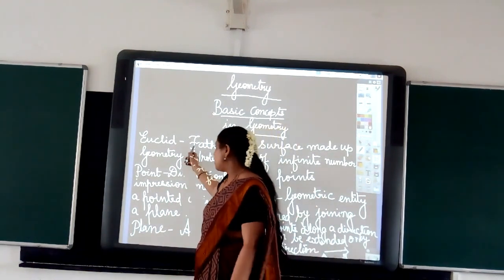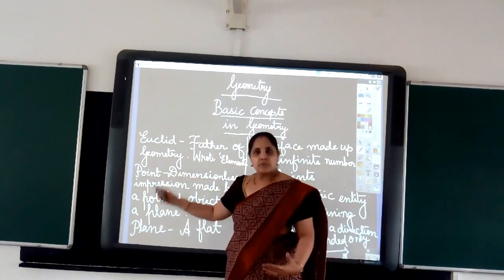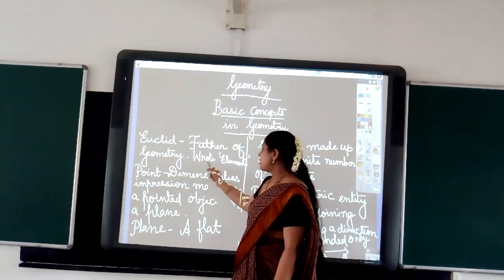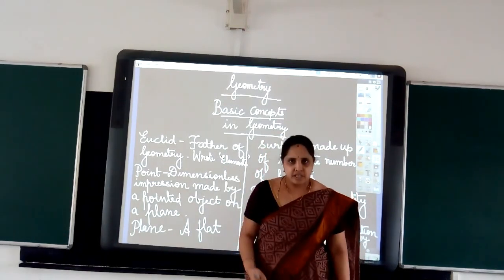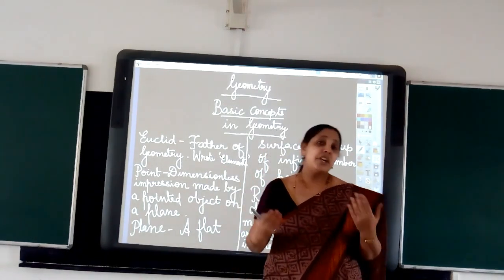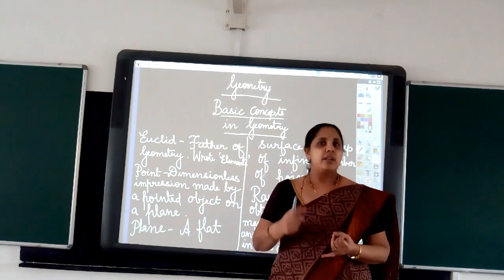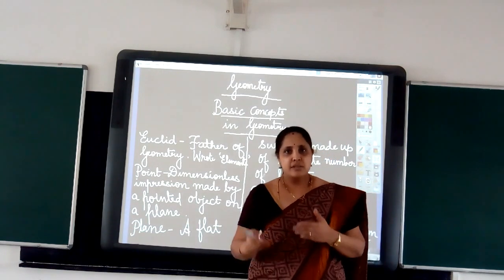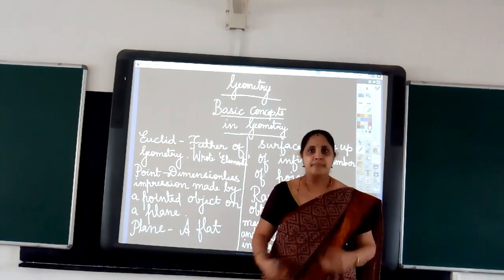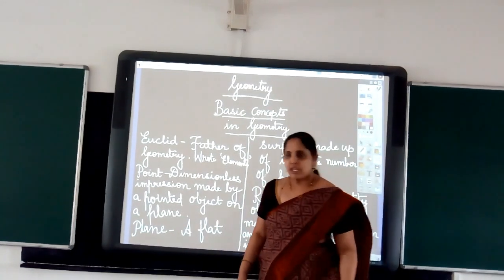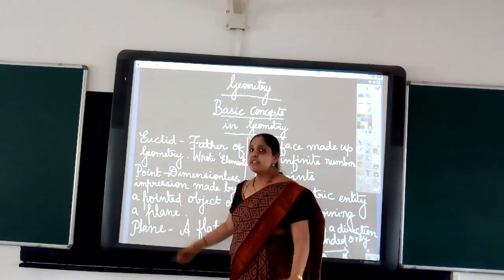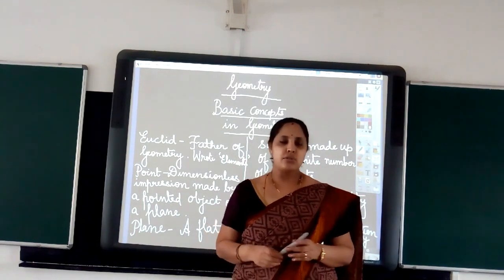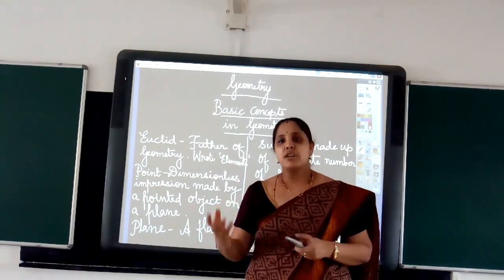Euclid was basically a Greek mathematician and he has written a book called Elements. In this book called Elements he mentions about point, line, ray, segment and many other entities that could exist in geometry. Today we are going to learn about some basic entities that could exist in geometry, the knowledge of which is very essential for us to move on with the remaining part of the course.